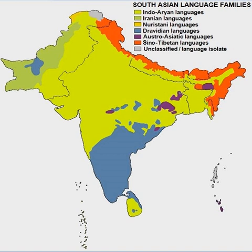The evolution of Old Tamil into Middle Tamil, generally taken to have been completed by the 8th century, was characterized by a number of phonological and grammatical changes. In phonological terms, the most important shifts were the virtual disappearance of the āytam phoneme, the coalescence of the alveolar and dental nasals, and the transformation of the alveolar plosive into a rhotic. In grammar, the most important change was the emergence of the present tense.